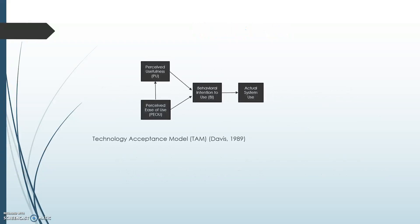The Technology Acceptance Model differs from the theory of reasoned action in that Davis theorized that social norms do not directly affect attitude or behavior in relation to system use. Instead, attitude toward using a system is a function of perceived usefulness and perceived ease of use. He contended that perceived ease of use will have a causal effect on perceived usefulness.